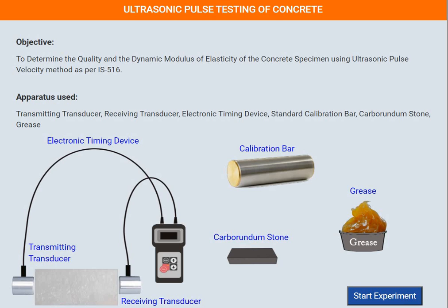The apparatus we are going to use includes a transmitting transducer, an electronic timing device to show the time, a calibration bar, a carborundum stone, and grease.